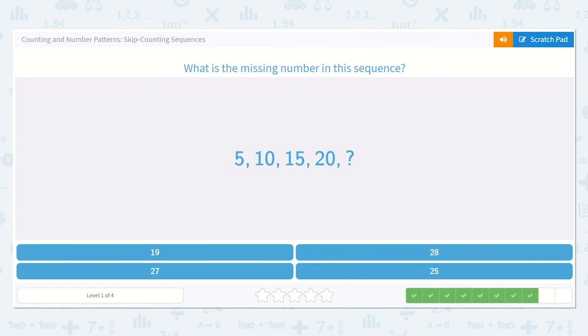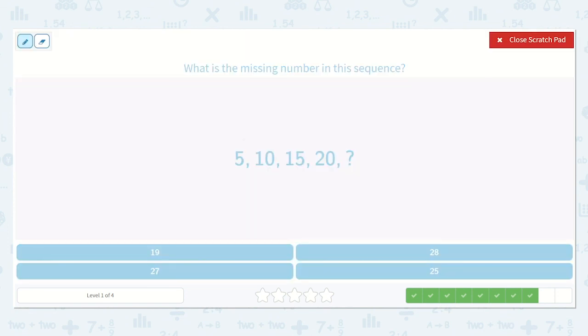Alright, 5, 10, 15, 20. Do you see the pattern? What are we counting by? Yes, 5s. 5 plus 5 is 10. 10 plus 5 is 15. 15 plus 5 is 20. 20 plus 5 is... Let's see. There's my 5 dots. So 20, 21, 22, 23, 24, 25. So we have 5, 10, 15, 20, 25. And our answer is right here.